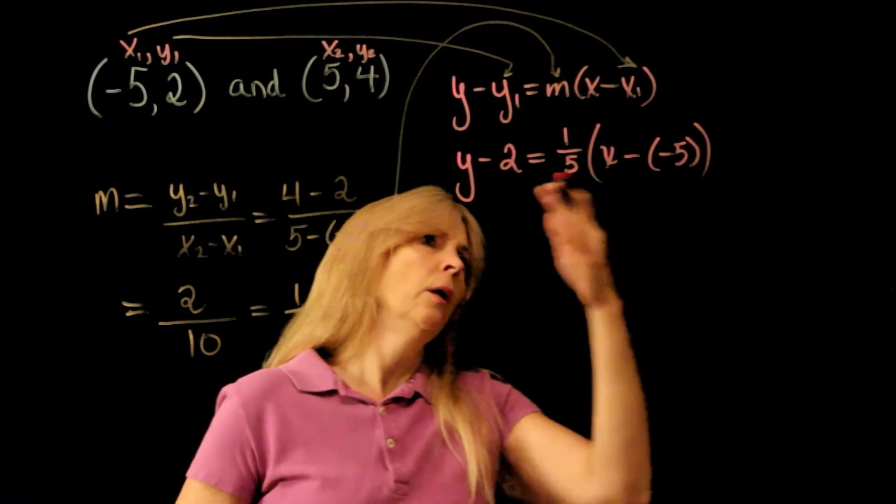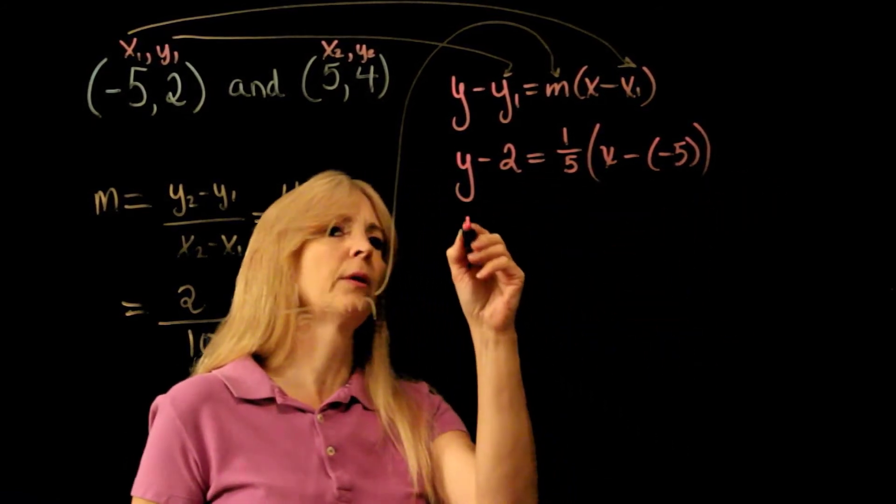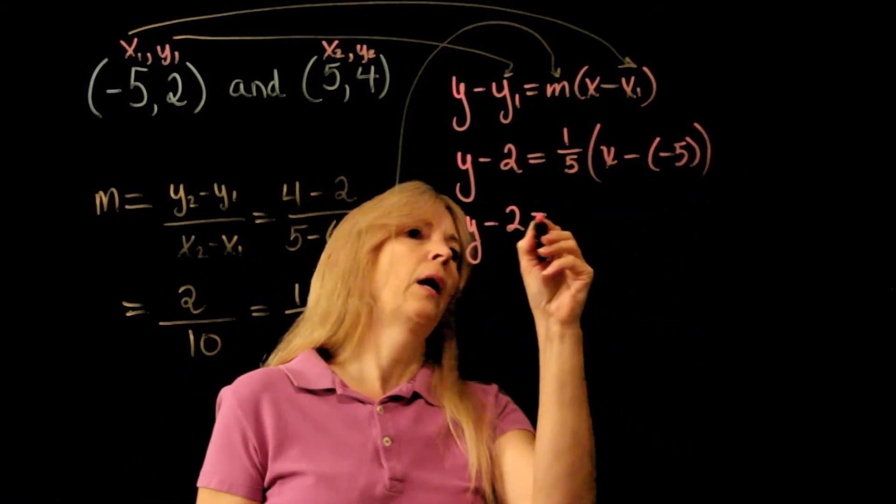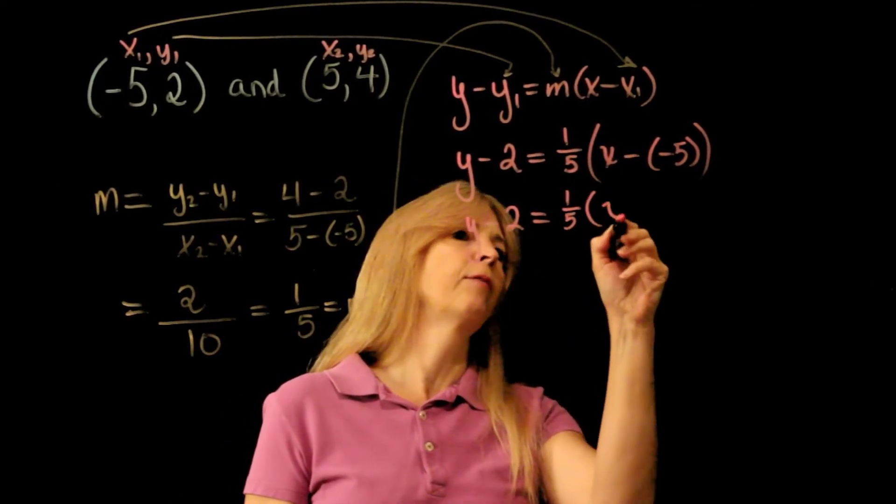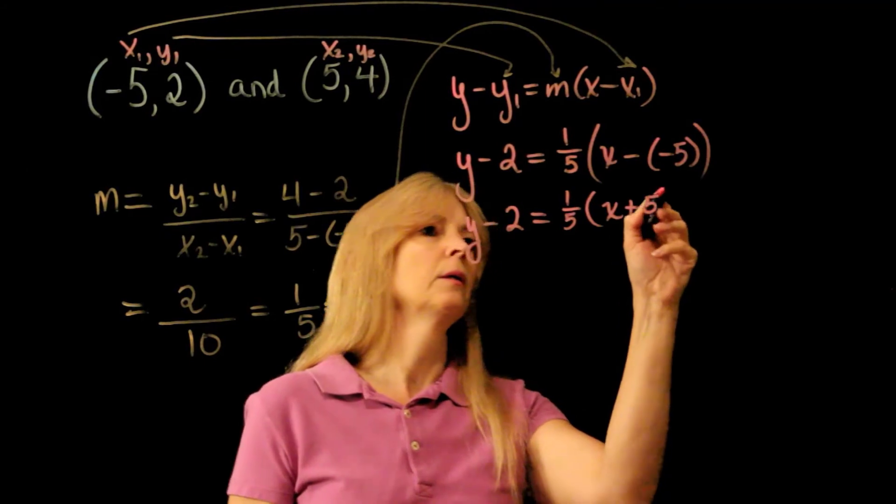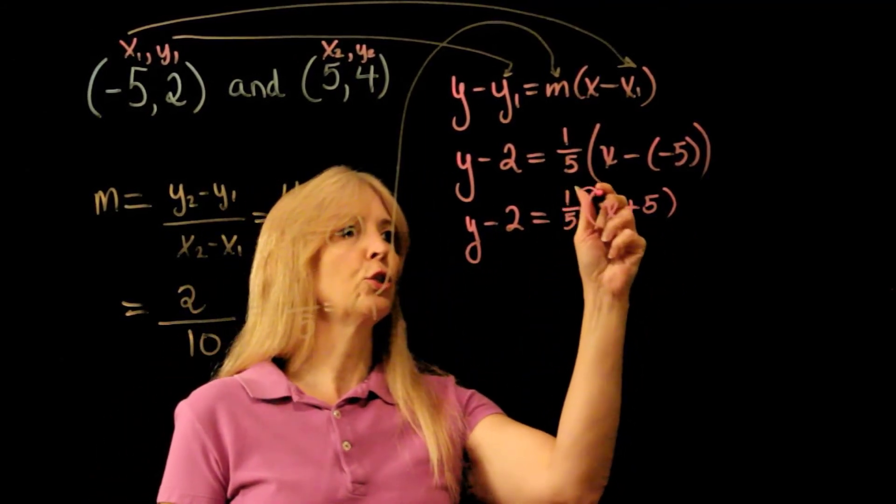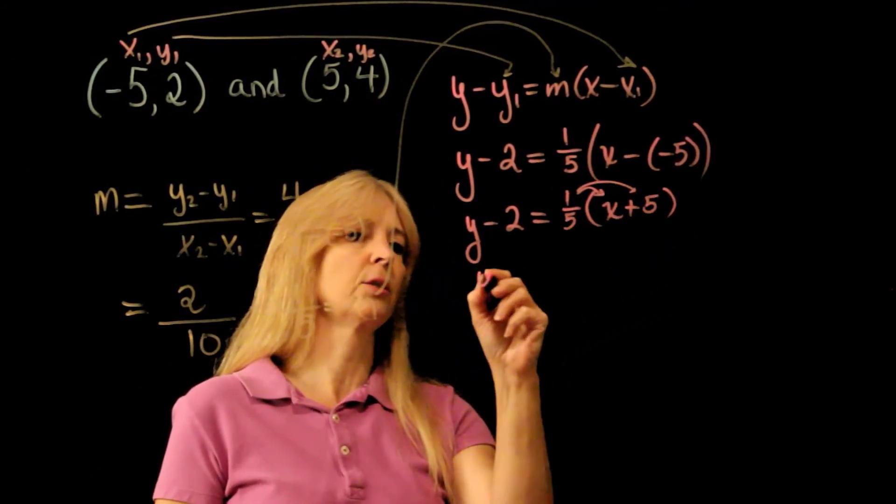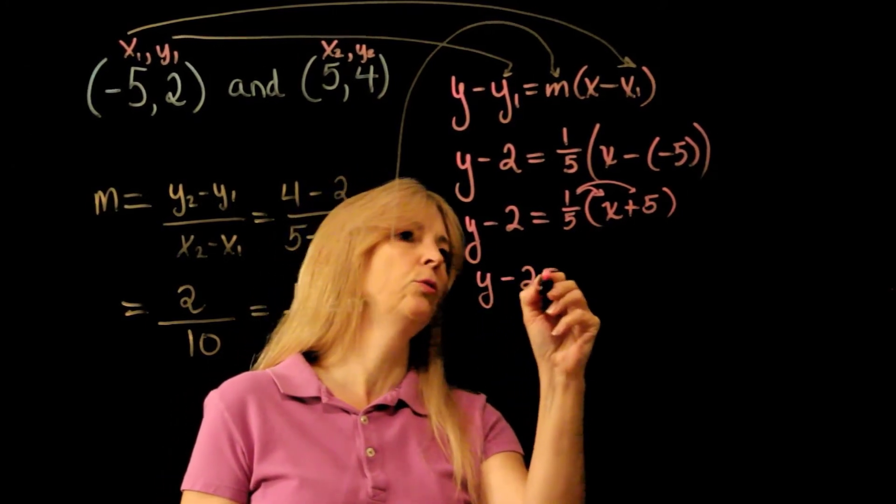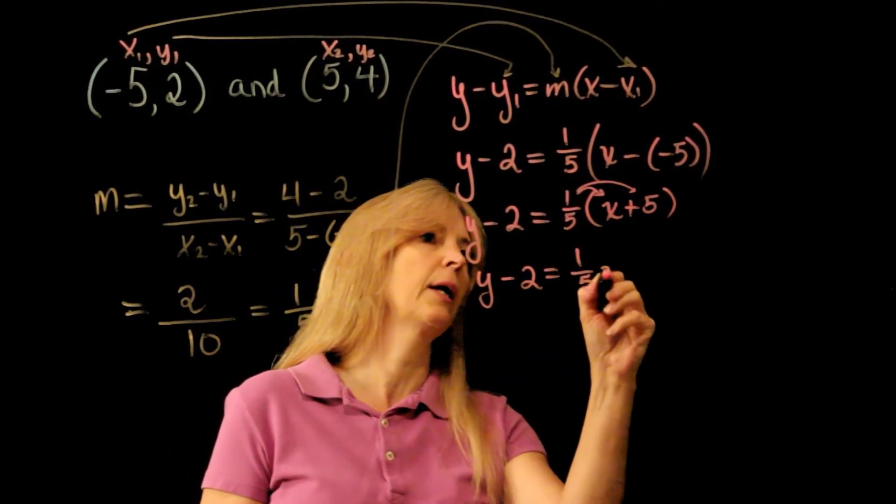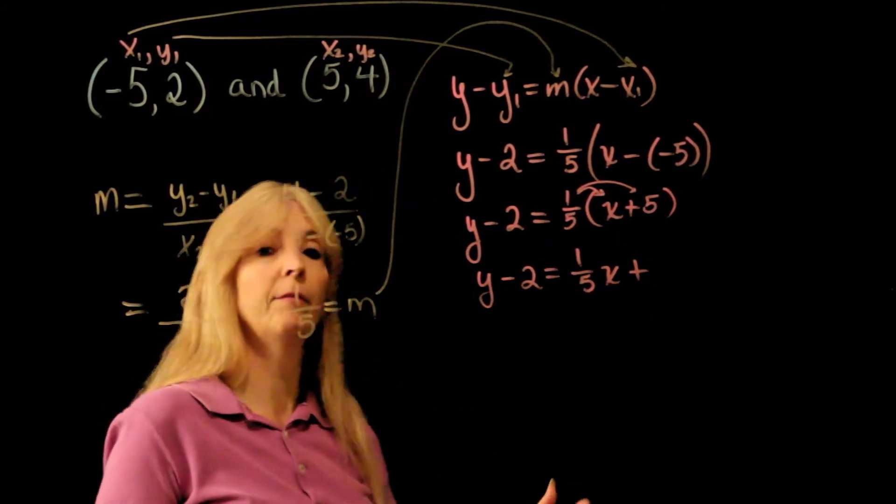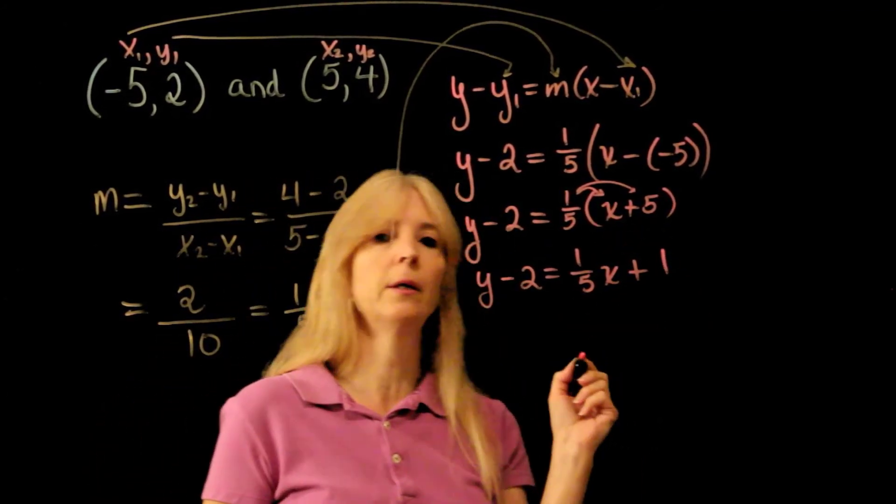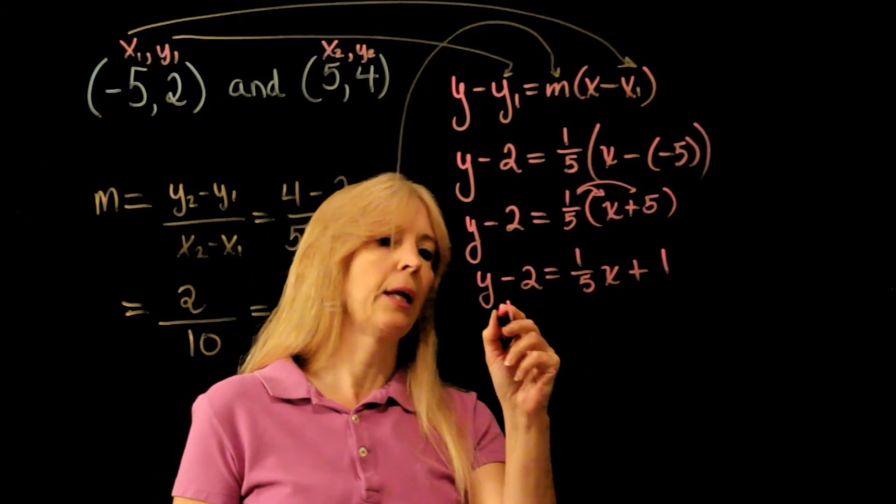Basically I'm done, but if I want this to look a little better, let's do my negative and negative first - that would be plus 5. Then I distribute that 1 fifth: y minus 2 equals 1 fifth x plus 1 fifth times 5, which is 5 over 5, or 1.